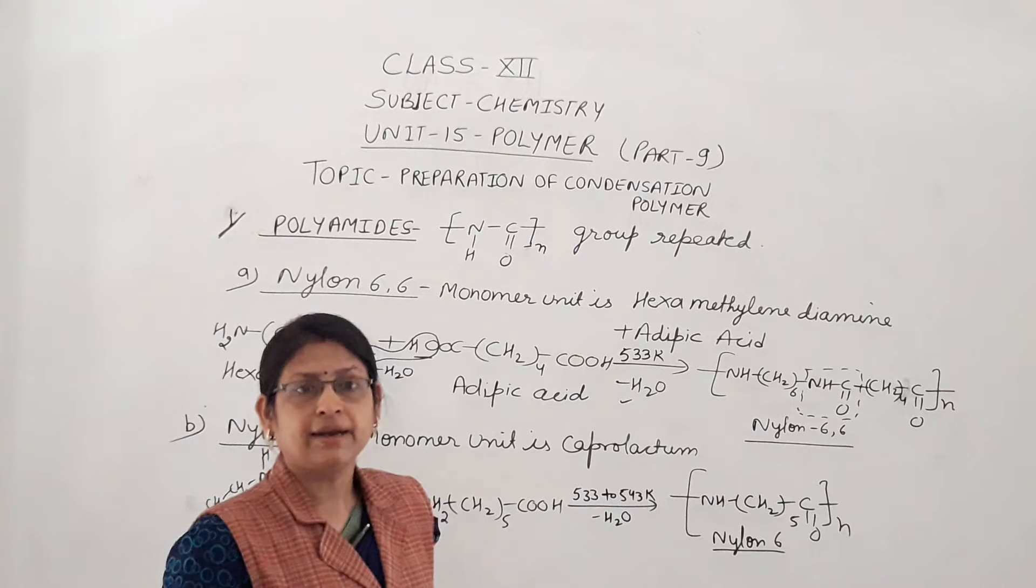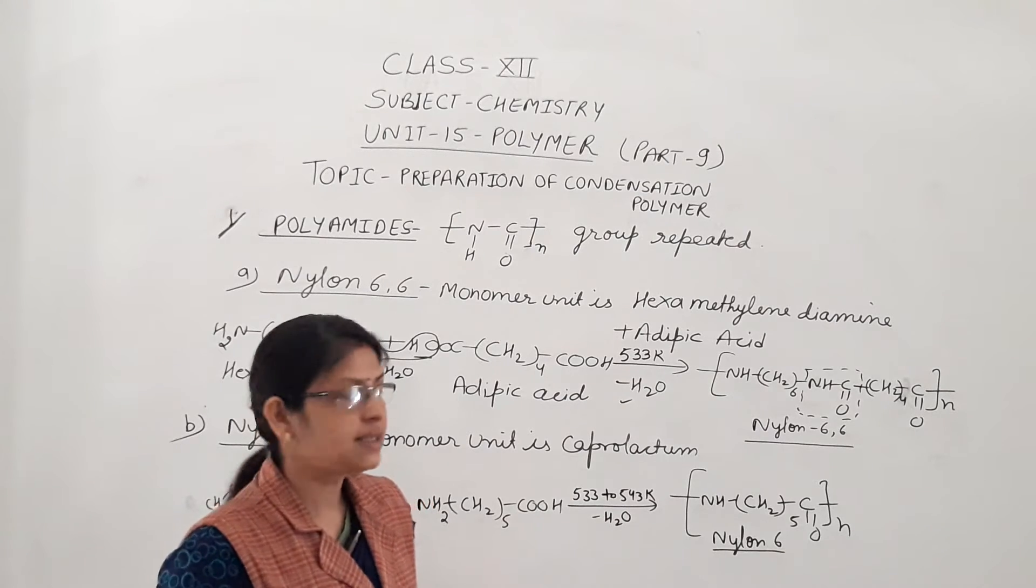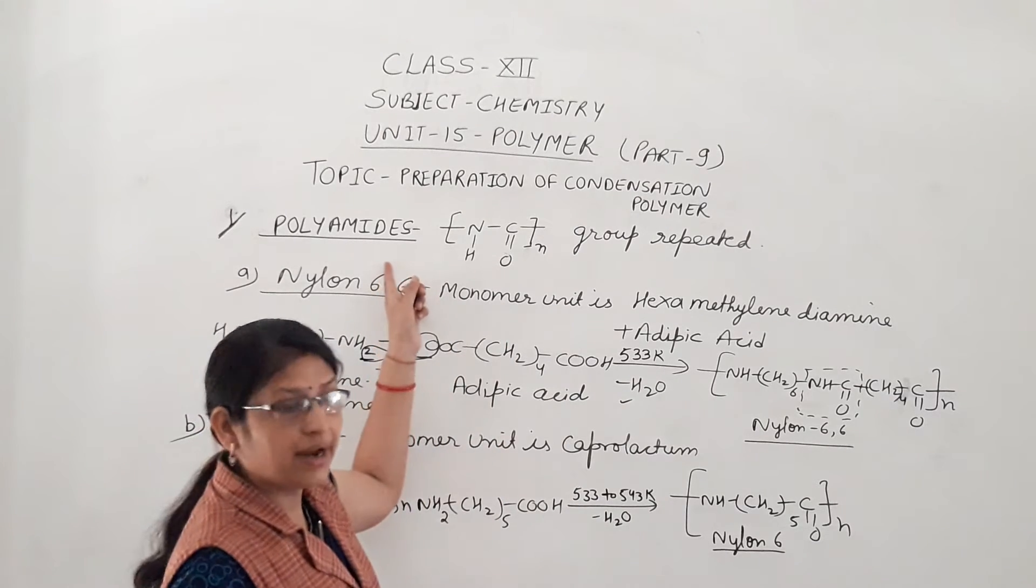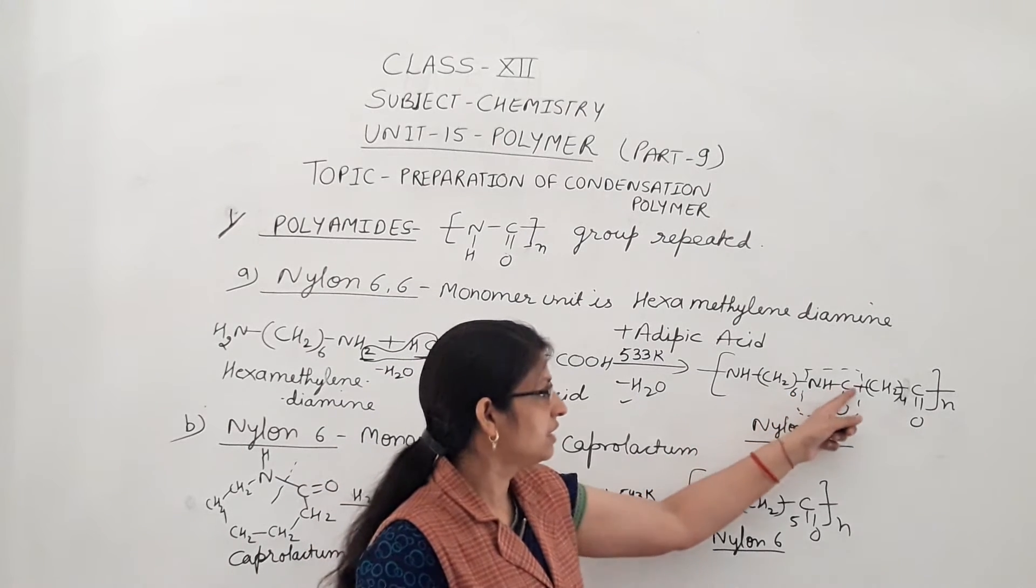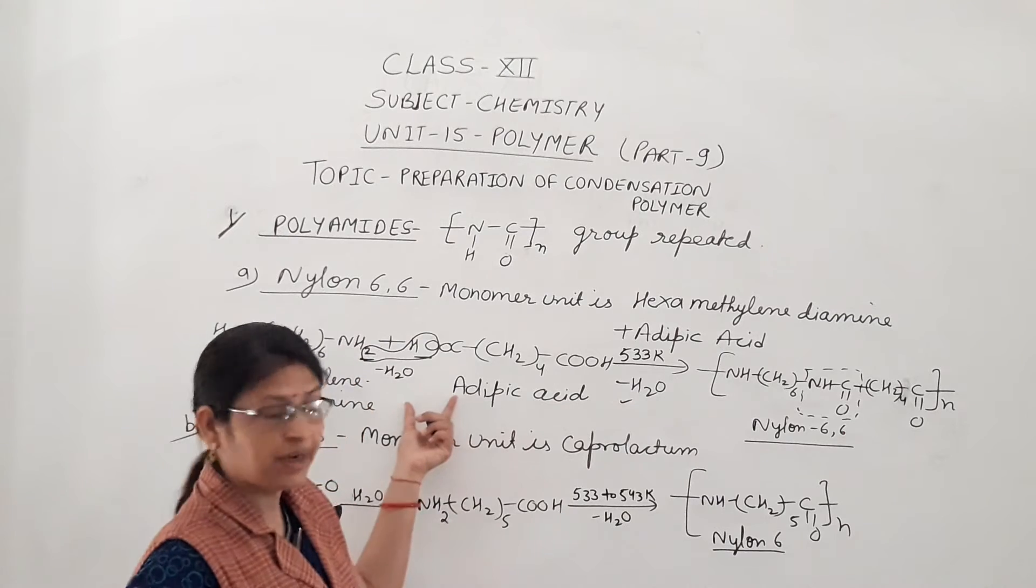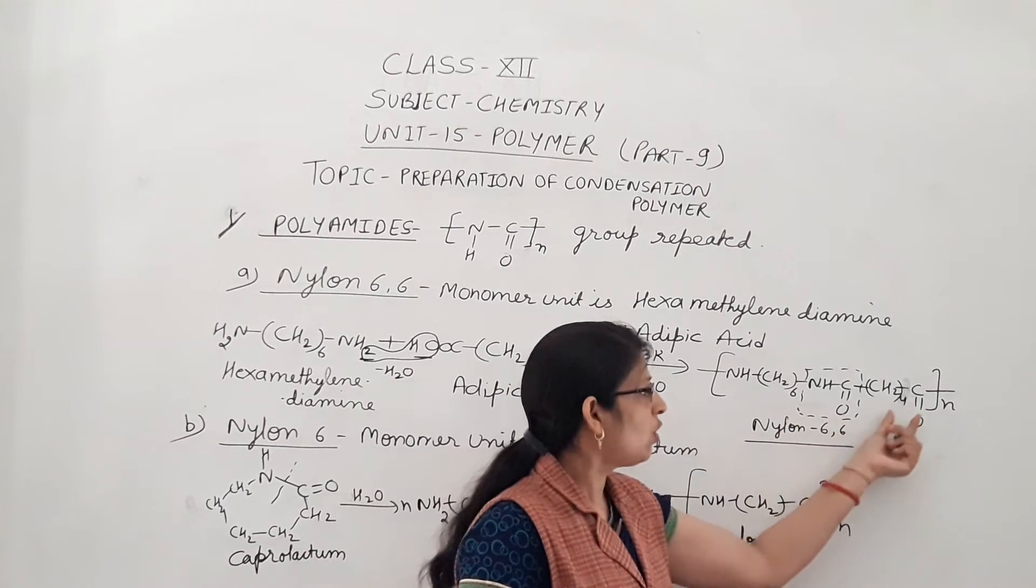So the polymer like nylon 6-6, nylon 6 is under the polyamides. H is replaced here: NH-(CH2)6-NH-CO. Because water is eliminated here. (CH2)4-CO. So that is the way of pattern to a polyamide.